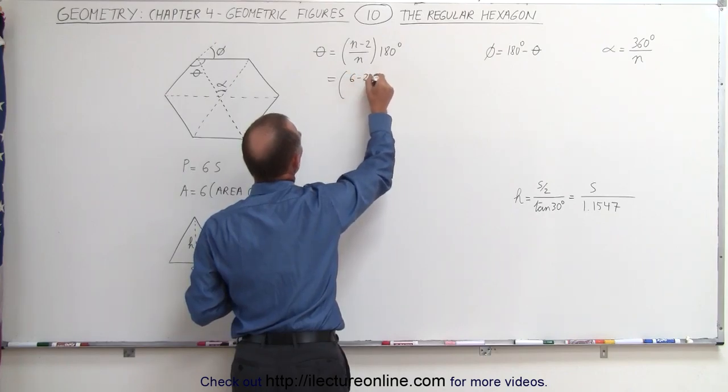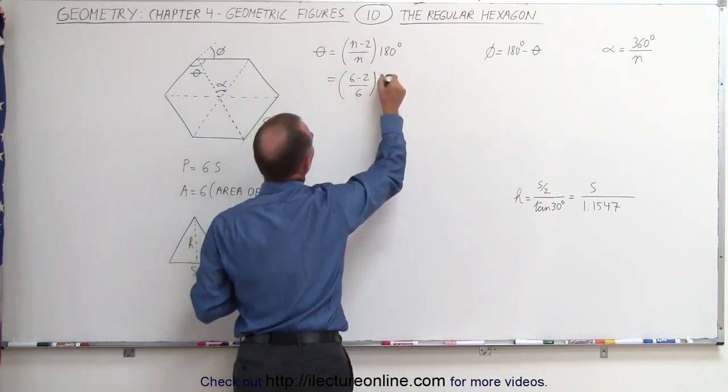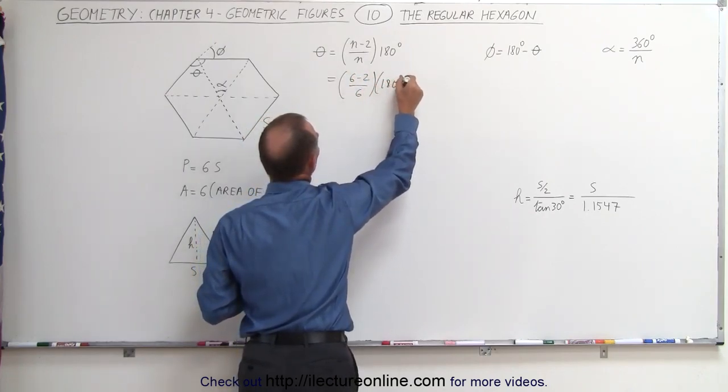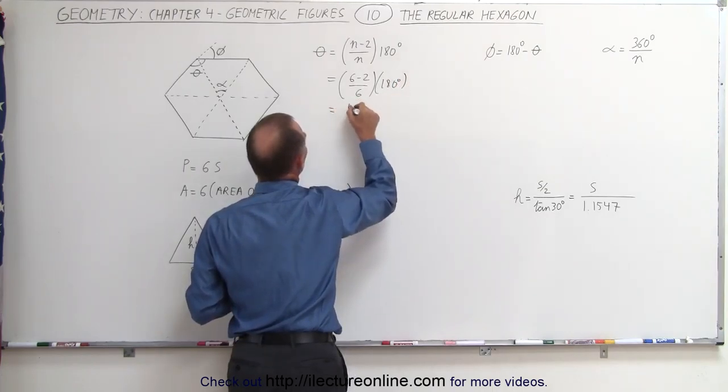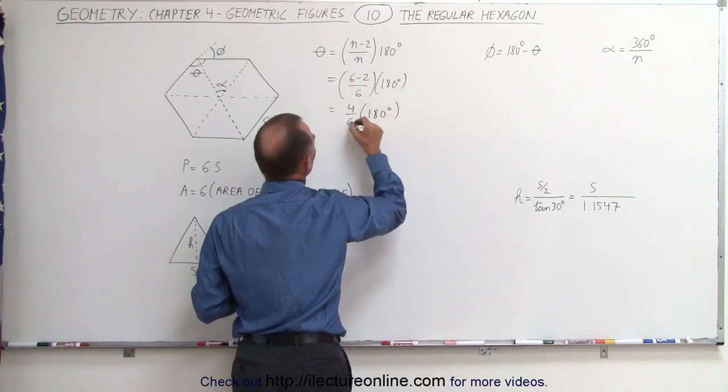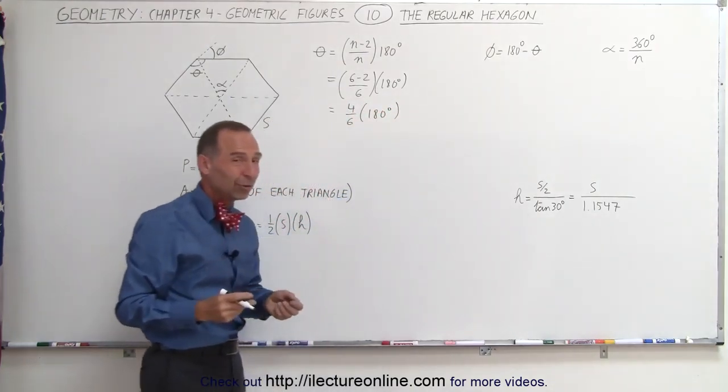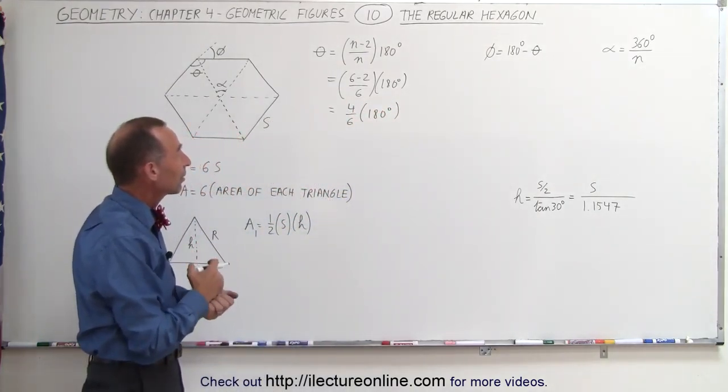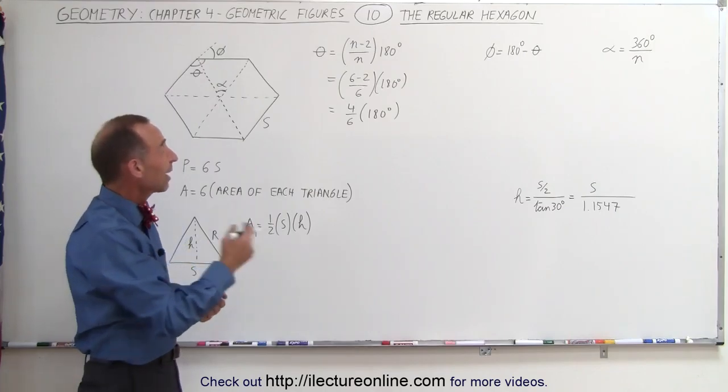6 minus 2 divided by 6 times 180 degrees, which is equal to 4 divided by 6 times 180 degrees, which is basically 2 divided by 3. So we take 180 degrees divided by 3, which is 60 degrees times 2.